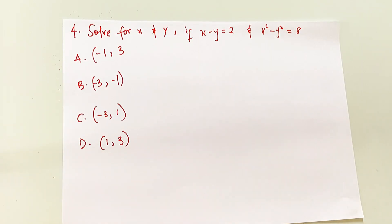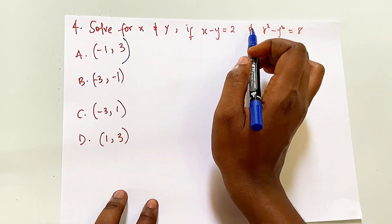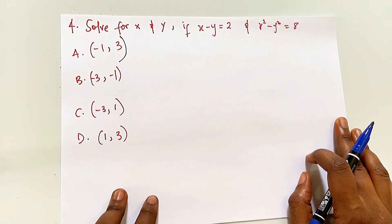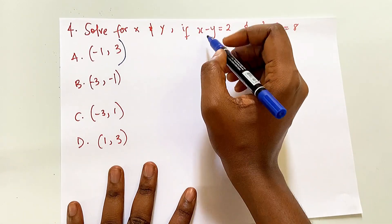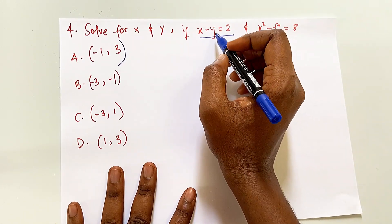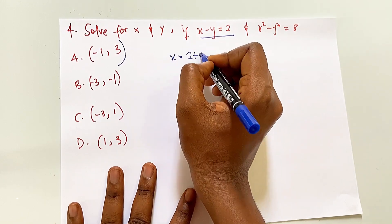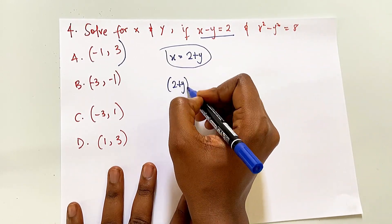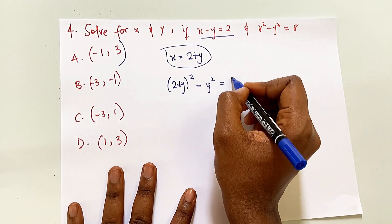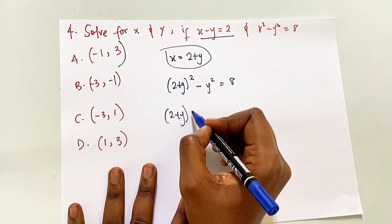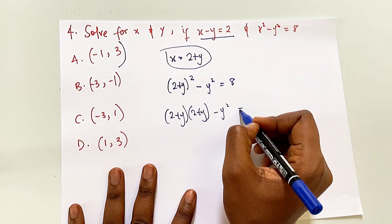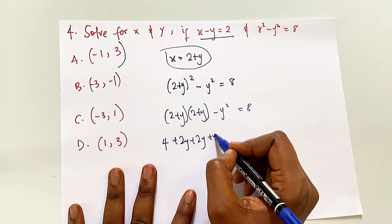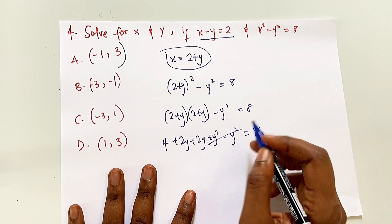Question number 4 says: solve for x and y if x - y = 2 and x² - y² = 8. This looks like a simultaneous equation. From the first equation: x = 2 + y. Substituting into the second equation: (2 + y)² - y² = 8. Expanding: (2 + y)(2 + y) = 4 + 2y + 2y + y² = 4 + 4y + y². So 4 + 4y + y² - y² = 8.